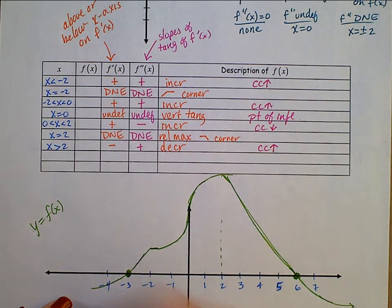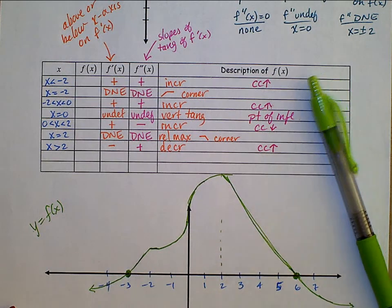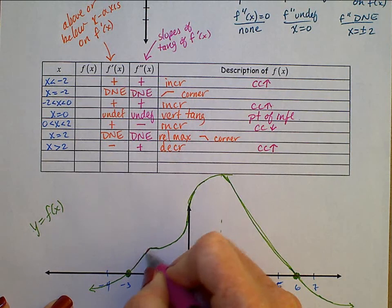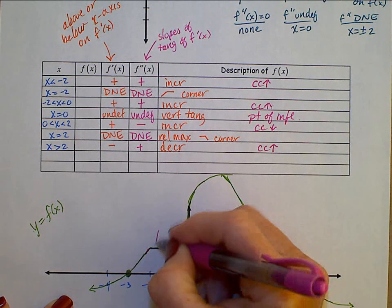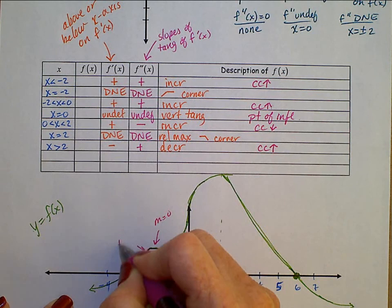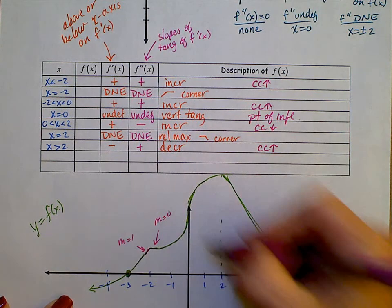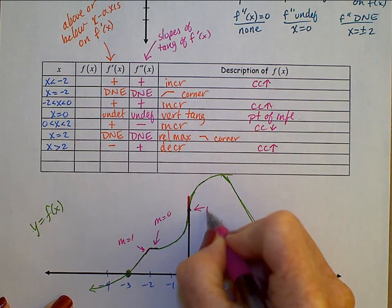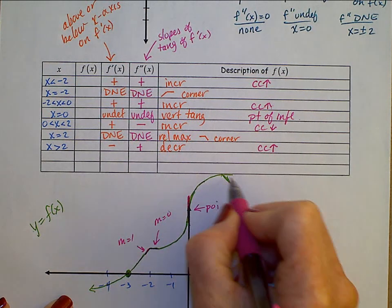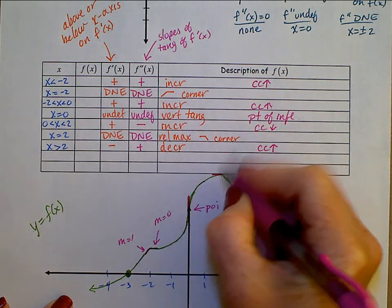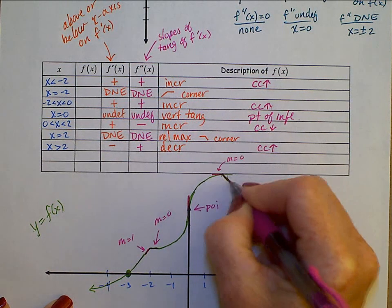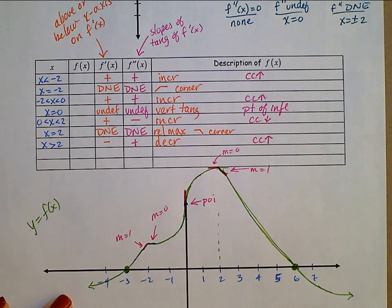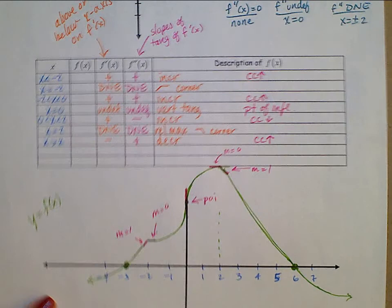The last thing to do is go back and put in some slope indicators: slope of 1 coming in to negative 2, slope 0 going out; vertical tangent at x equals 0 marking the point of inflection; and slope 0 coming in at x equals 2. Thank you very much.